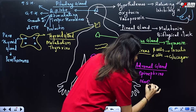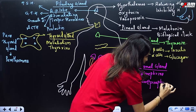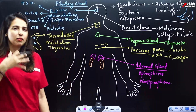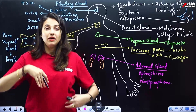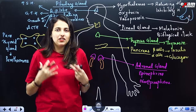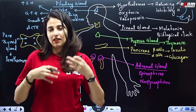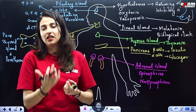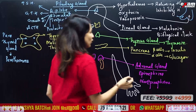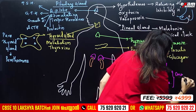The adrenal gland secretes adrenaline and noradrenaline. These are called emergency hormones because they help the body respond to emergency situations by increasing blood glucose level and respiration rate.